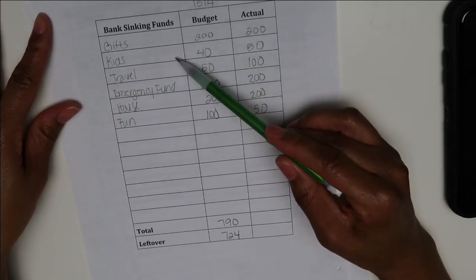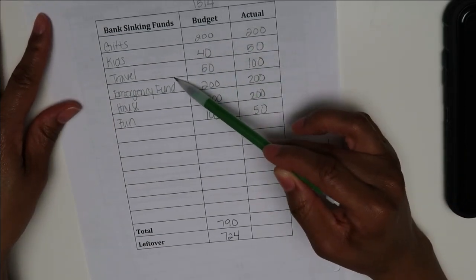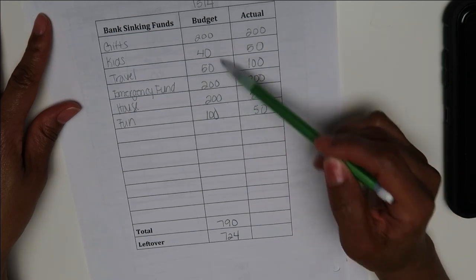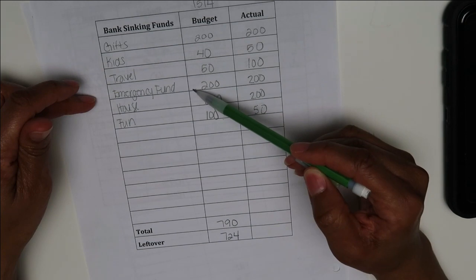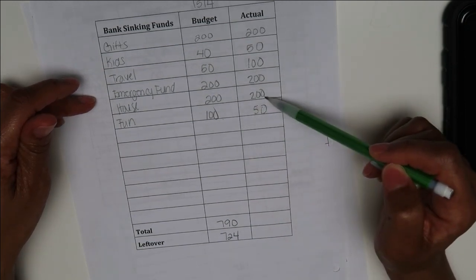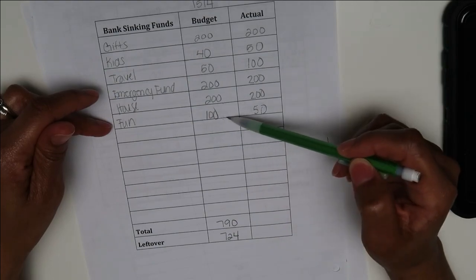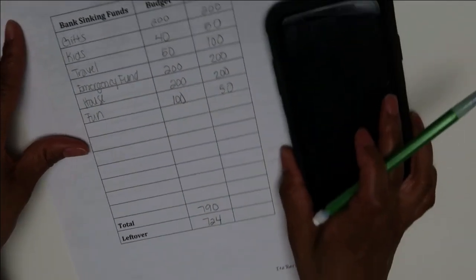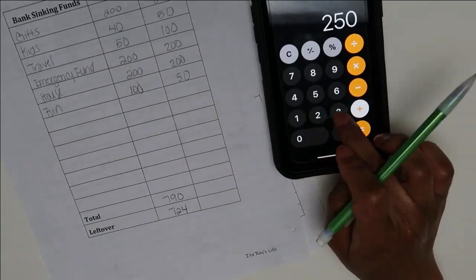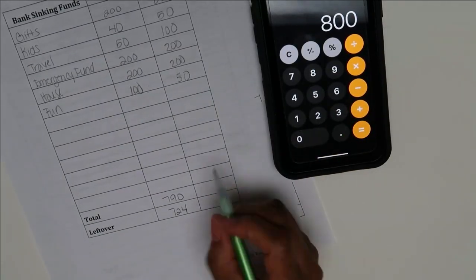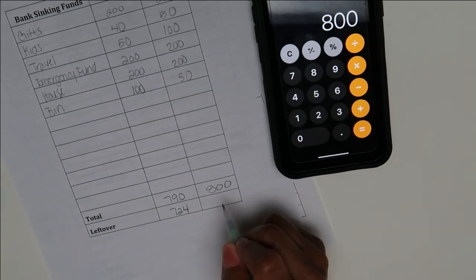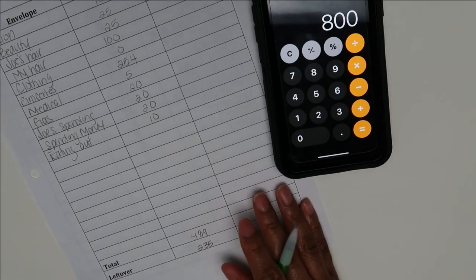So gifts, I budgeted $200 and I put $200. Kids, I budgeted $40 and put $50. Travel, I budgeted $50 and put $100. I had these two backwards, that's why. Emergency, budgeted $200, I put $200. House, budgeted $200, put $200. Fun, I budgeted $100 and put $50. So I can actually add those ones up as well. That gave us a total of $800.